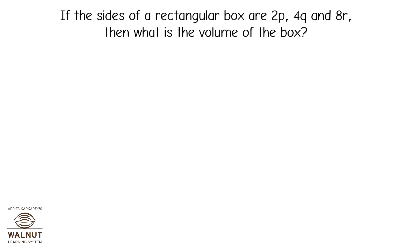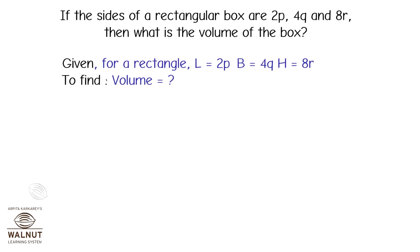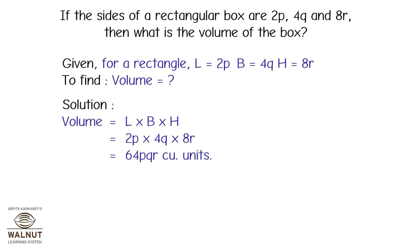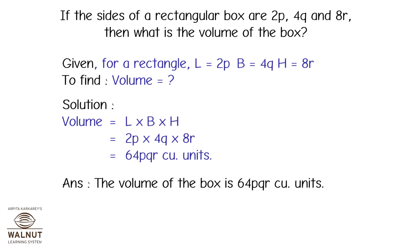If the sides of a rectangular box are 2p, 4q, and 8r, then what is the volume of the box? Volume equals l into b into h, which is equal to 2p into 4q into 8r, which is equal to 64pqr cubic units. The volume of the box is 64pqr cubic units.